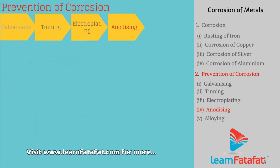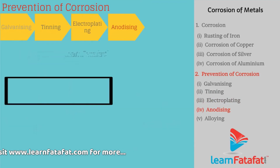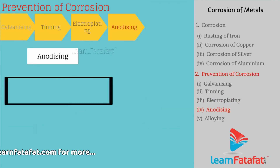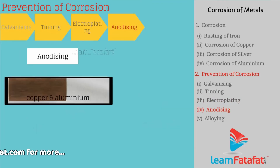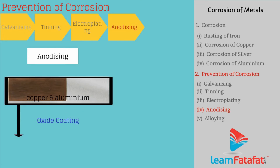Anodizing: In this method, metals such as copper and aluminium are coated with a thin, strong layer of their oxide. This oxide layer prevents further oxidation of the metal.